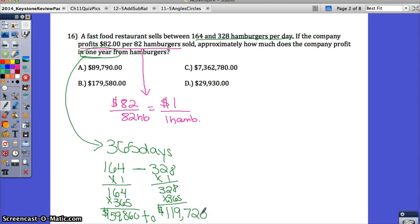Which of these answers seems to be appropriate? It's between about $60,000 and $120,000. This one's too high. This one's $7,000,000. That's way too high. D's too low. So your answer's going to be A. About $89,790 is how much the company could profit in one year.